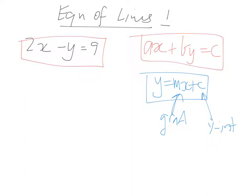So what we're going to do is transpose this. I'm going to take this 2x and bring it over to the other side. It's positive 2x, so it's going to become negative 2x over there. So we're going to say -y = 9 - 2x.